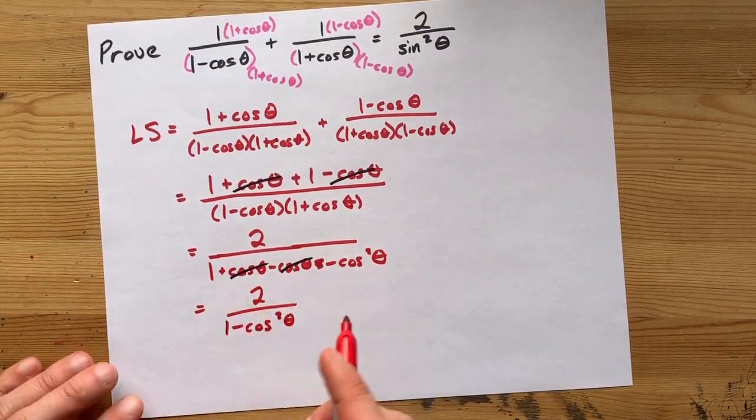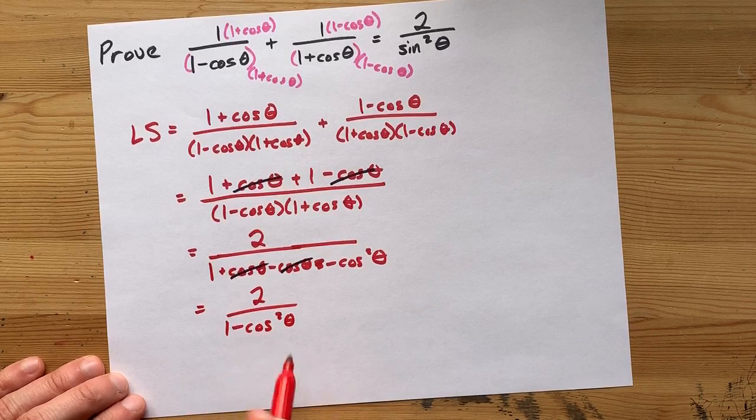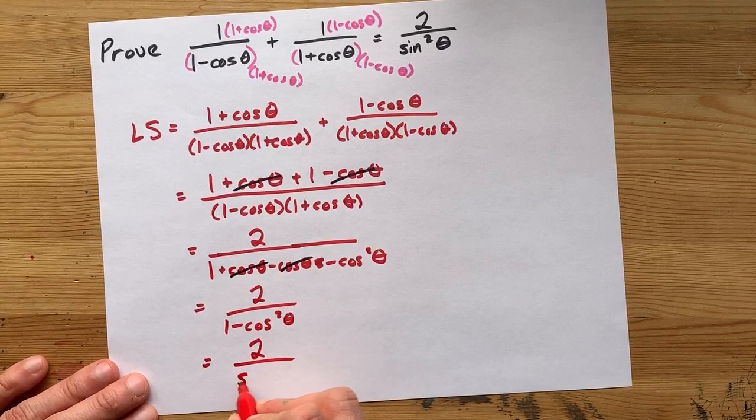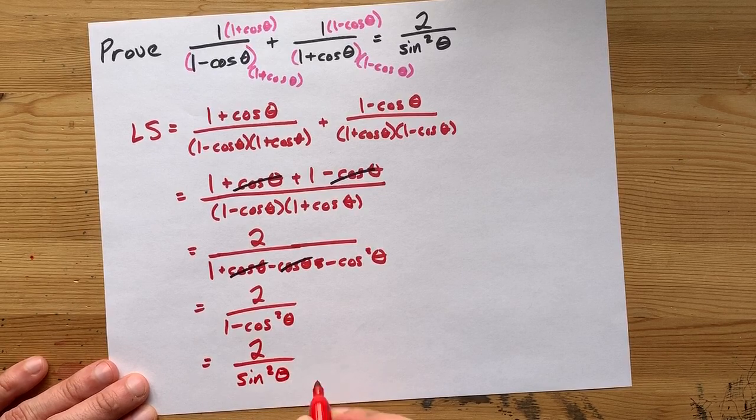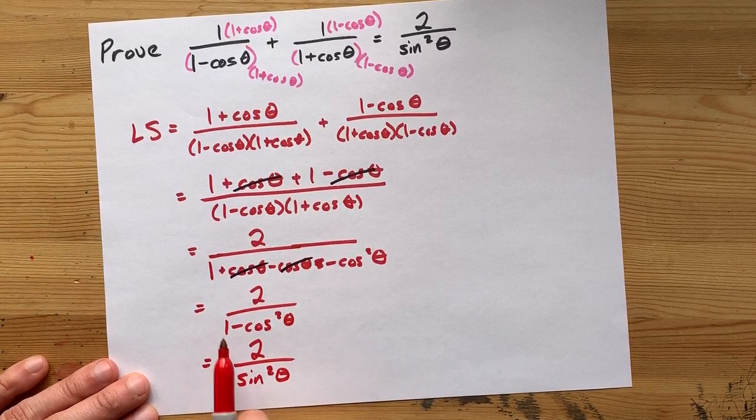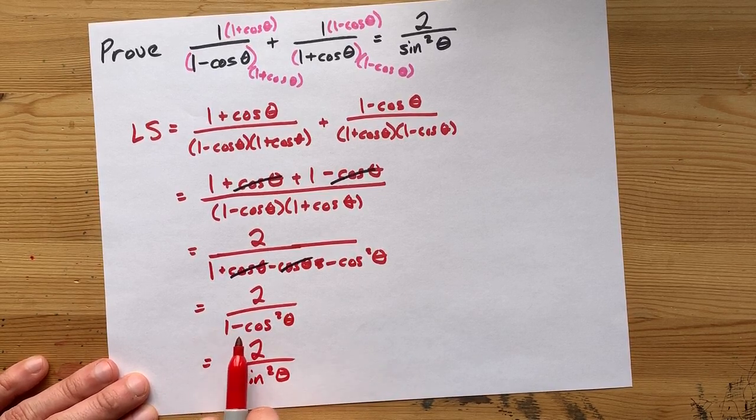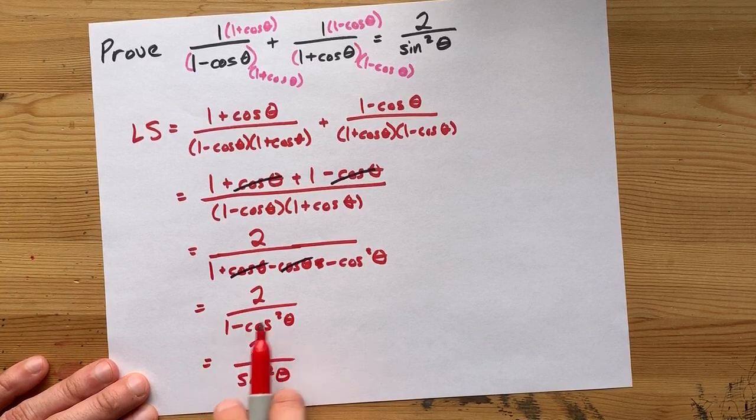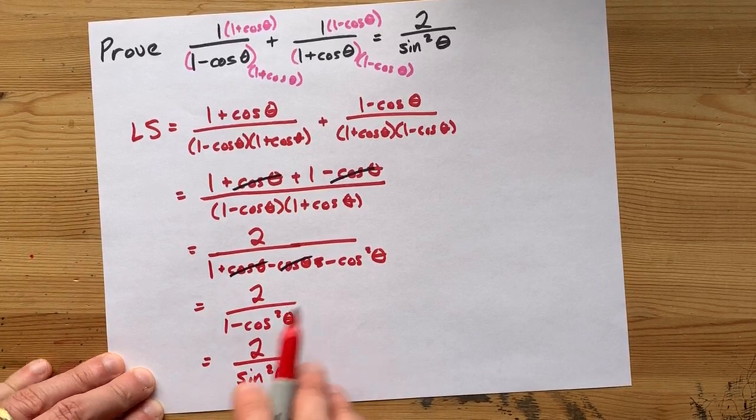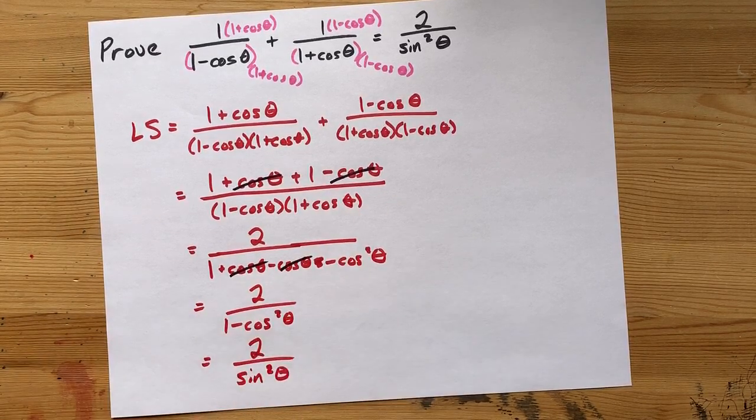And hopefully by now you know that 1 minus cos squared is the same as sine squared. If you don't know that, try replacing the 1 with sine squared plus cos squared. Then your plus cos and minus cos squareds cancel. You're left with sine squared. Whatever. You see it.